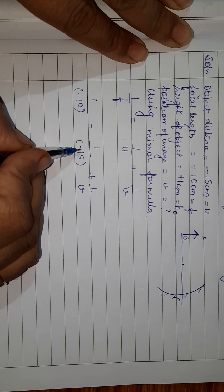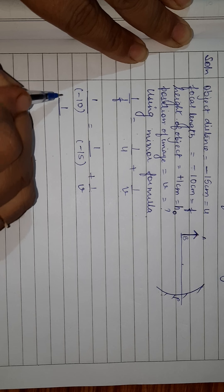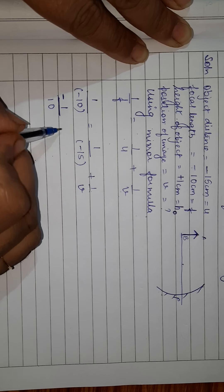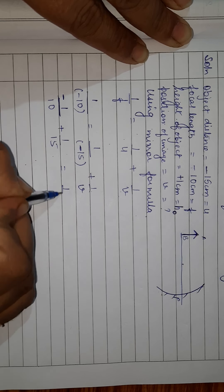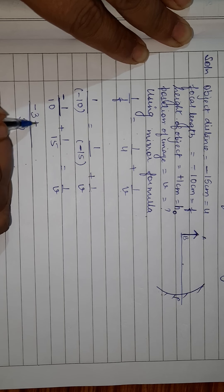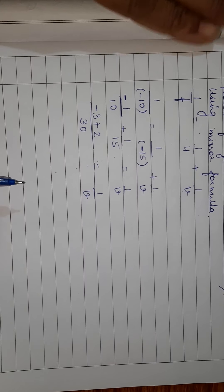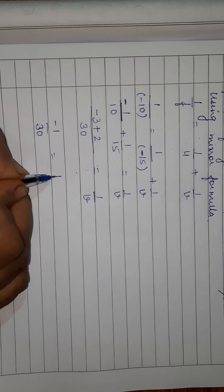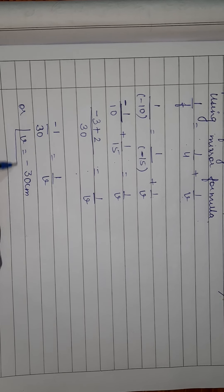Transposing: 1 upon 10 minus 1 upon 15 equals 1 upon V. LCM is 30. Minus 3 plus 2 is minus 1, so minus 1 upon 30 equals 1 upon V, giving V equals minus 30 centimeter. So the position of image is minus 30 centimeter.